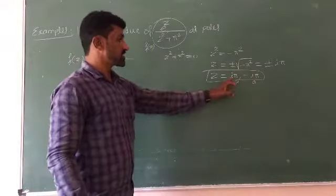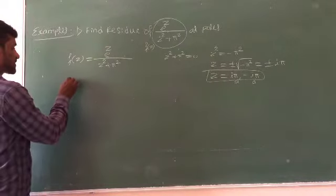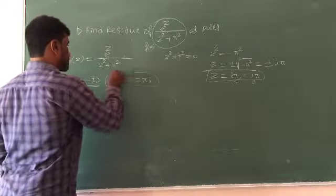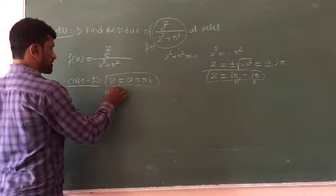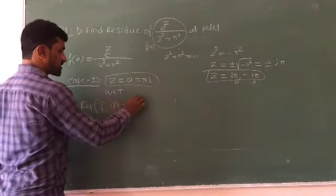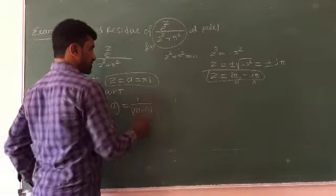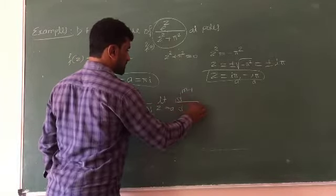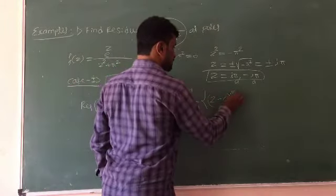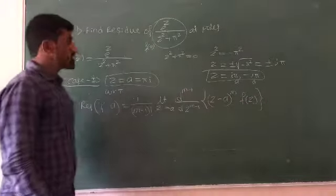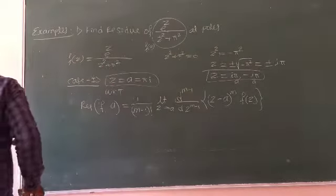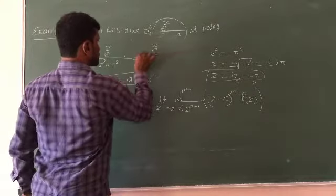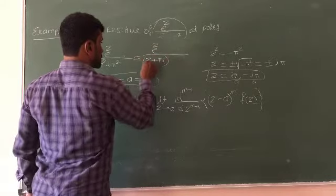We have two cases. Case one: a equals i pi. Case two: a equals minus i pi. We know the residue formula: 1 divided by (m minus 1) factorial, times the limit as z tends to a, of d raised to (m minus 1) divided by dz raised to (m minus 1), times (z minus a) raised to m, times f(z). The function f(z) factors as e raised to z divided by (z plus i pi) times (z minus i pi).